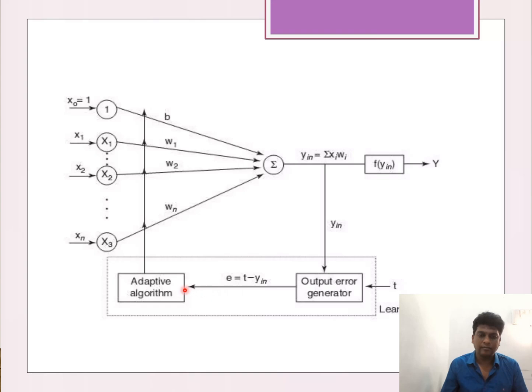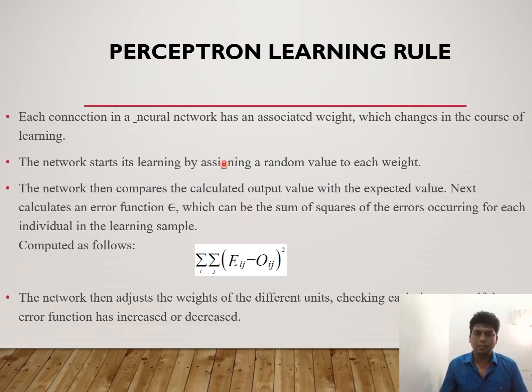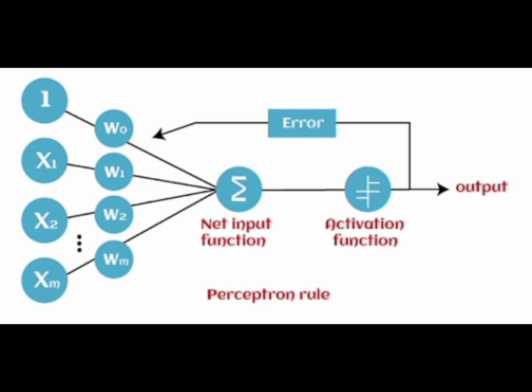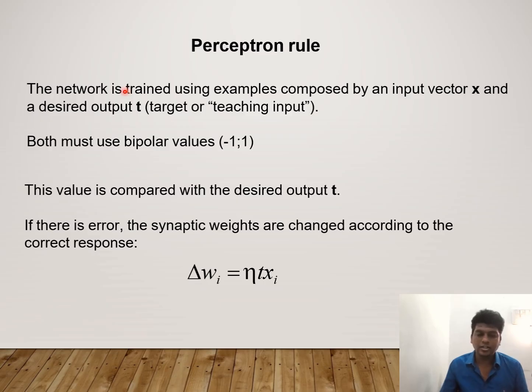In the perceptron rule, the network starts its weights by assigning random values. We can find the error function by calculating the difference between predictive and actual output values. Then by adjusting the weights and checking each layer, the error function has either increased or decreased. If there is an error, the synaptic weights are changed and updated based on the learning rate, target value, and output value.